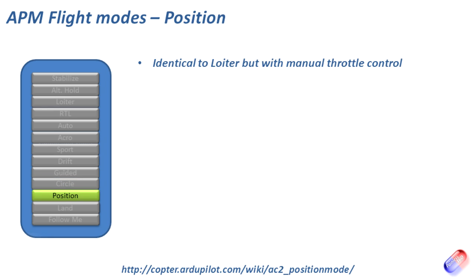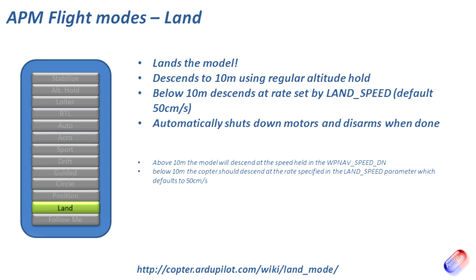Position mode is really identical to Loiter but with manual throttle control, since Loiter manages height itself. Land mode does exactly what it says — it lands the model. As it comes down to 10 meters it uses regular Altitude Hold settings; below 10 meters it uses the land_speed setting of about 50 centimeters per second, which is a very soft landing speed. Once landed and it senses touchdown, it shuts down the motors and disarms. The model can actually land more smoothly than I can most of the time.